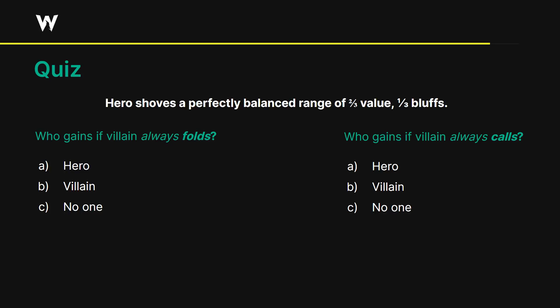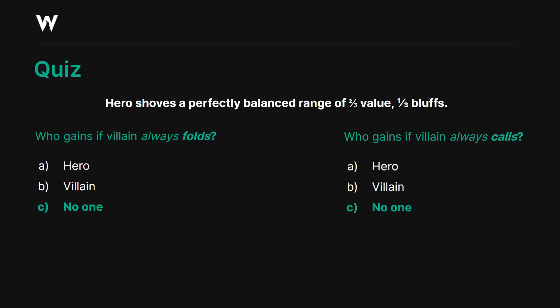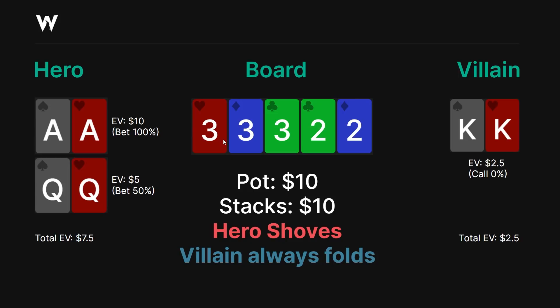The answer is that no one gains. Hero does not adjust to these tendencies. If villain's always folding, of course they should bluff more; if villain's always calling, they should stop bluffing. But because this is a mixing mistake — a frequency mistake — and not a pure mistake, you don't actually gain anything. The EV of aces is now $10 — always winning the pot but never winning villain's stack since they call 0%. The EV of queens is $5 because they always win the pot when they bet, but they're still checking back half the time — not adjusting to exploit the overfold. The total EV is exactly $7.50 as before.